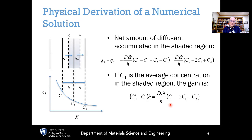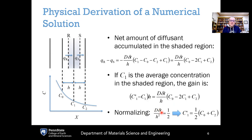It is also common numerically to choose a normalizing factor where the time step delta t is chosen such that D times delta t over h squared equals one half. That is a common way of simplifying the problems.